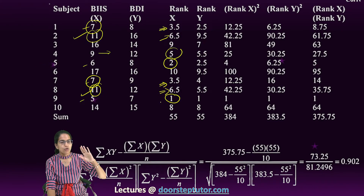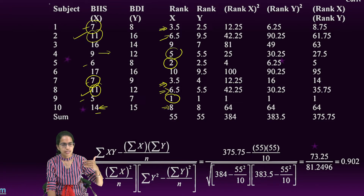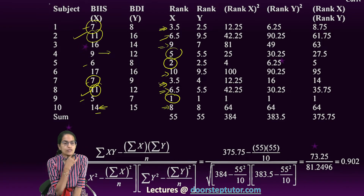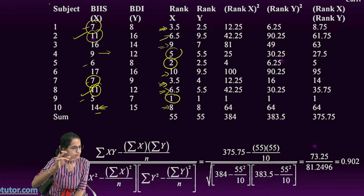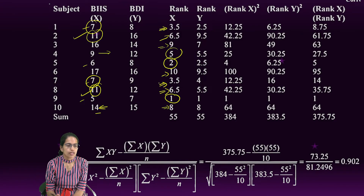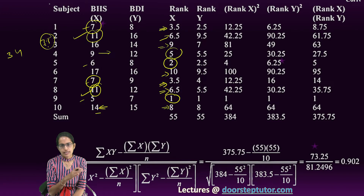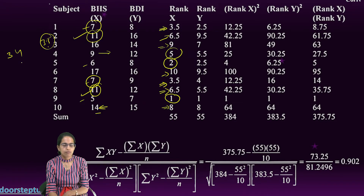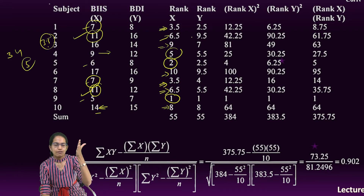After assigning 6.5 to those tied students, ranks 6 and 7 are gone, so the next person with 14 marks receives rank 8, followed by ranks 9 and 10. When more than one person secures the same marks, we use tied ranks by taking the average of the positions they would occupy. So if two people tie at positions 3 and 4, both receive 3.5, and the next person is directly assigned rank 5.